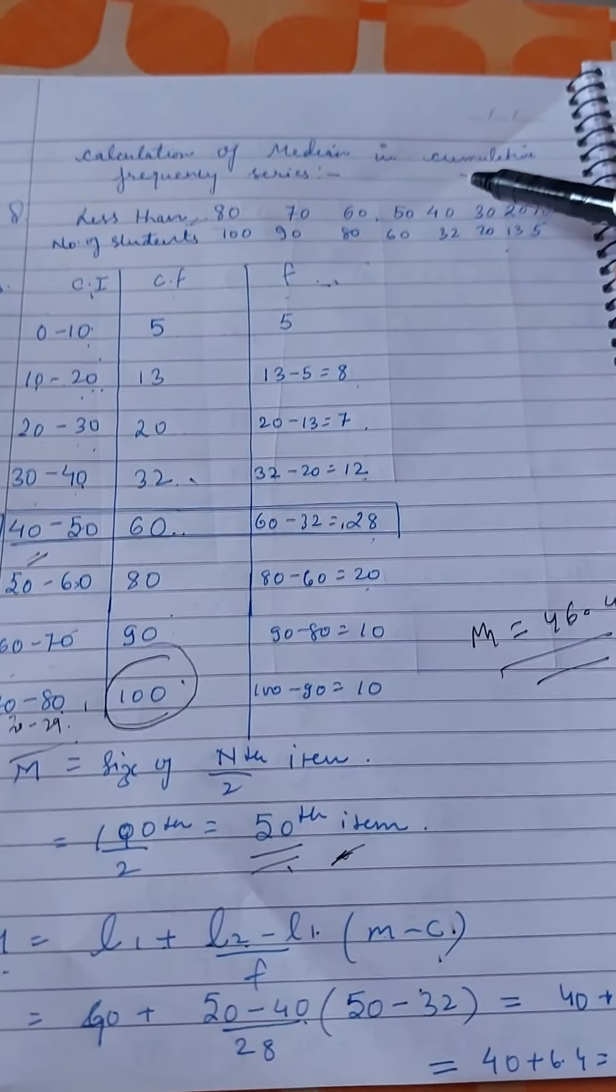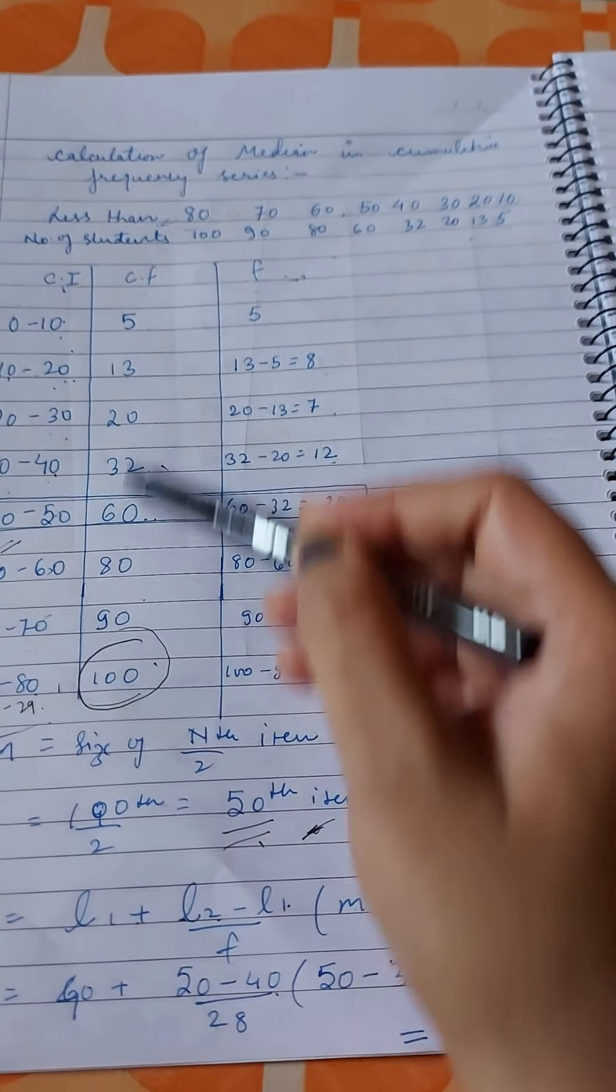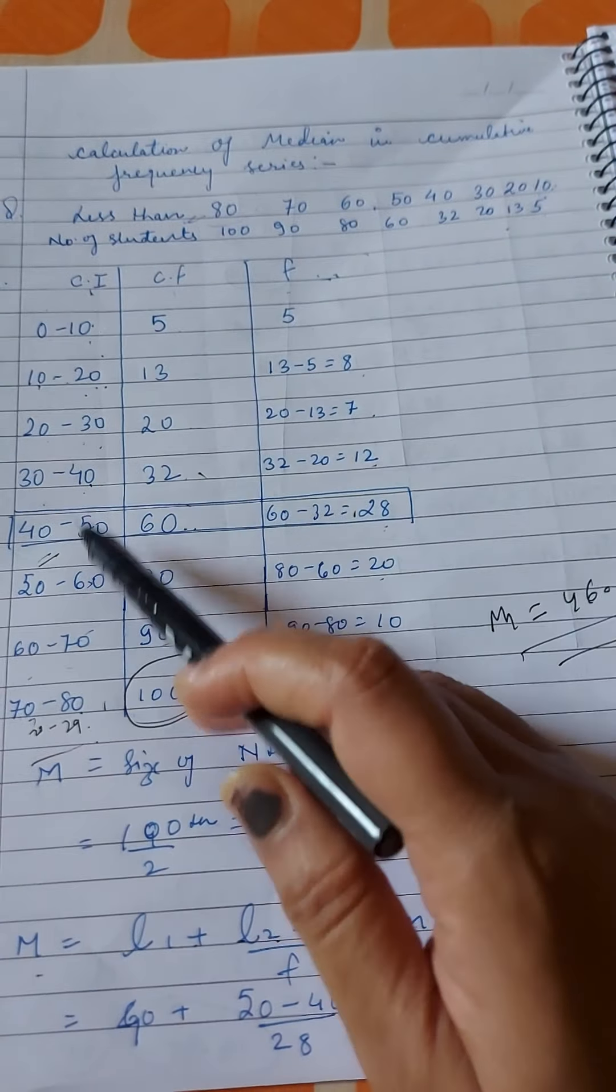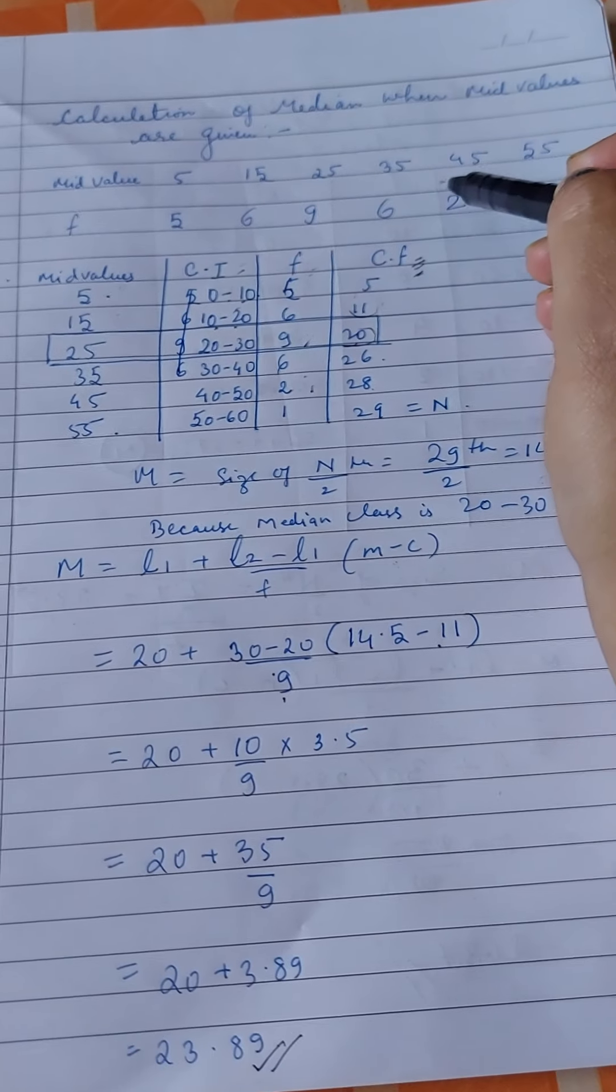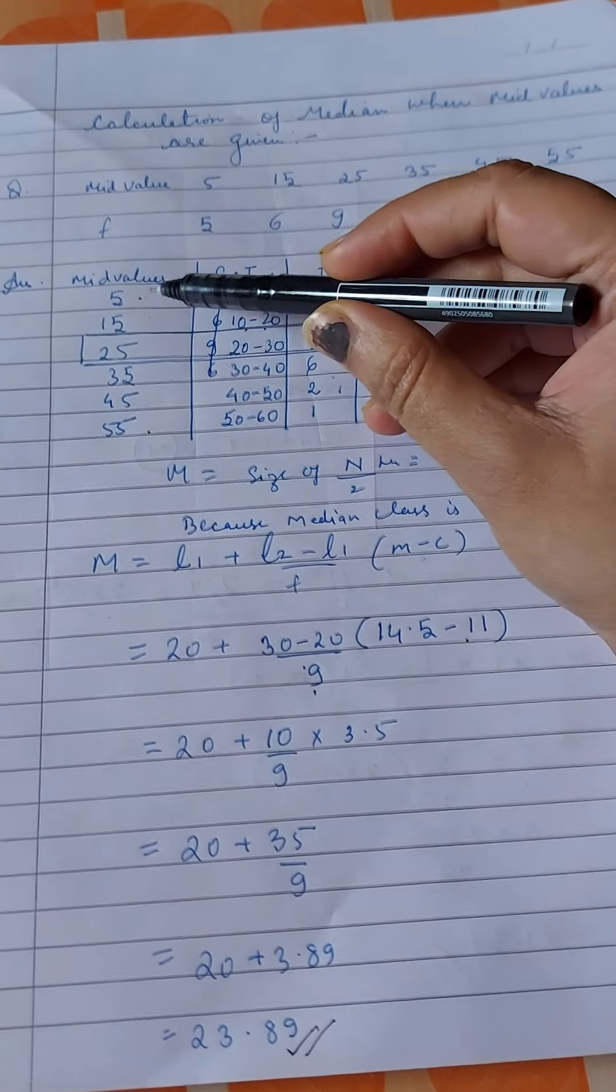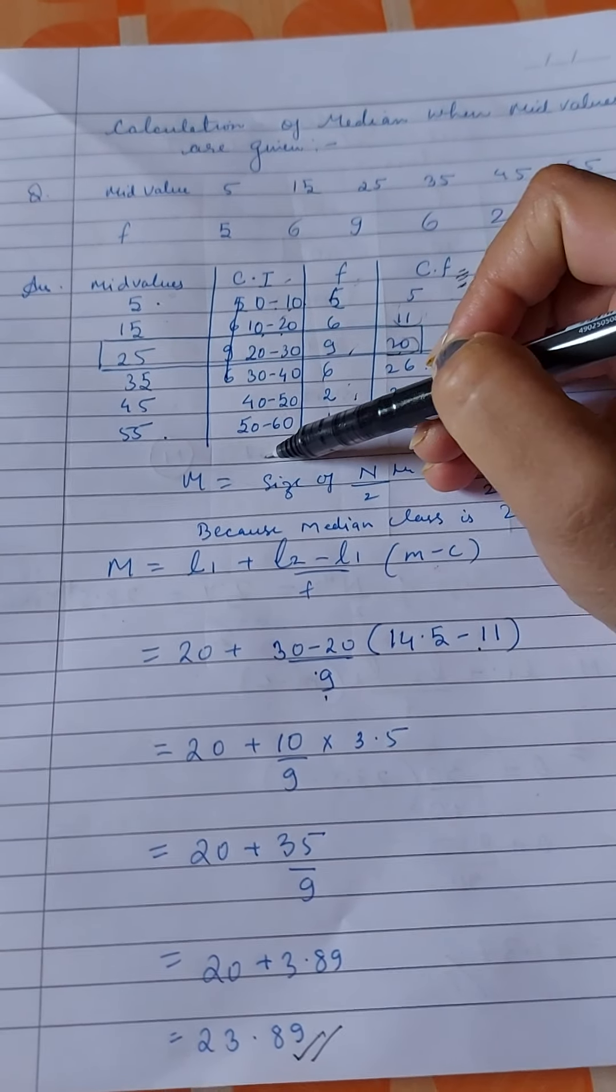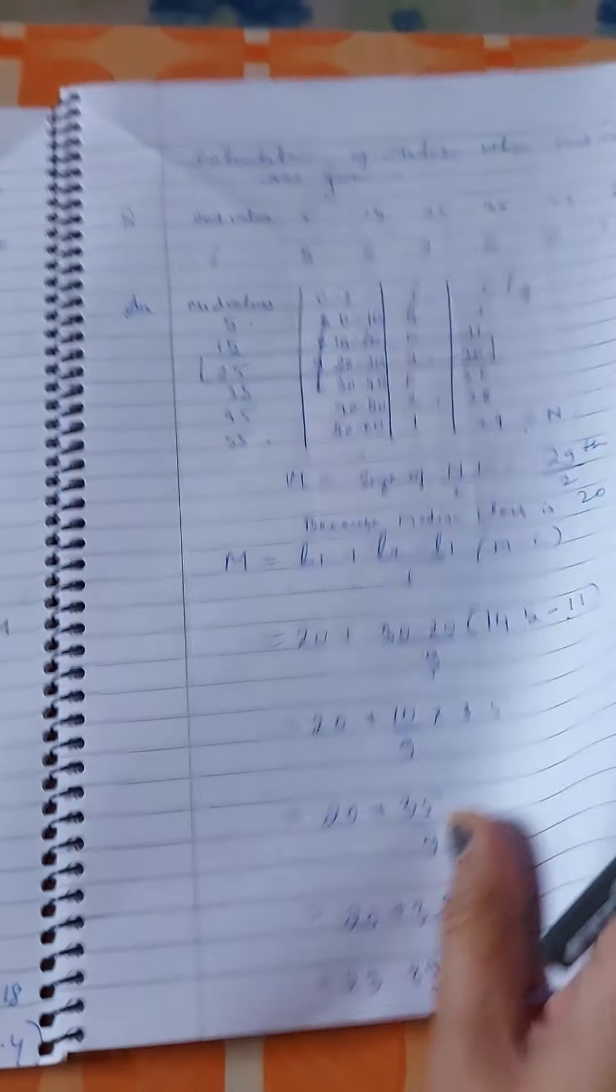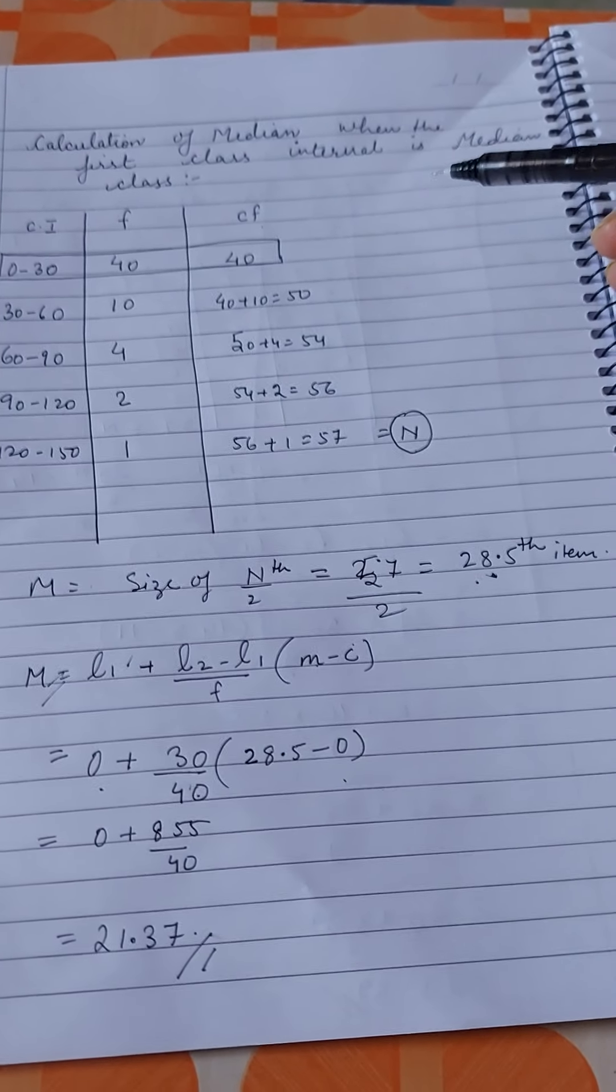The second question is calculation of median in cumulative frequency series. When we solved the less than question, we started from behind and calculated this way. Next is calculation of median when mid values are given: 5, 15, 25, 35, 45, 55, etc. When mid value is given, then we have to find class interval. Frequency is given, we find cumulative frequency, and we solve the question by putting in the formula.